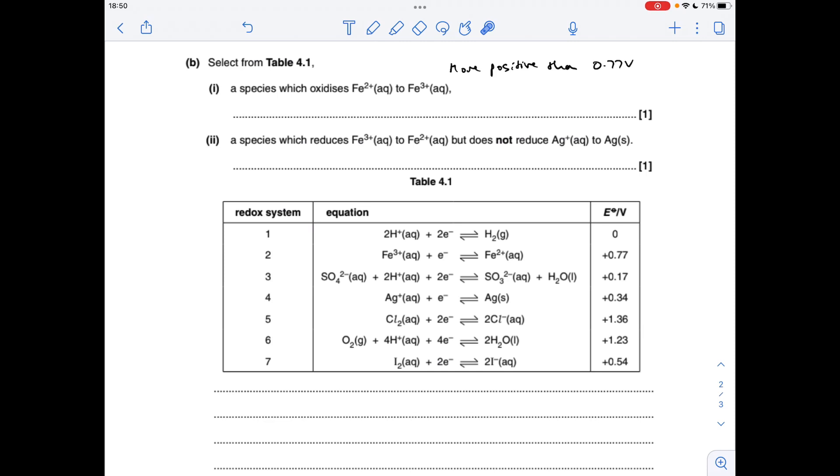So a species which oxidizes Fe2+ to Fe3+, basically we want this half equation here to run backwards, so it needs to be more positive than 0.77 volts. You can see these two here, the oxidizing agent, the electron acceptor, is the thing on the left hand side.